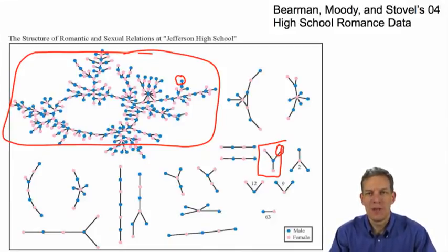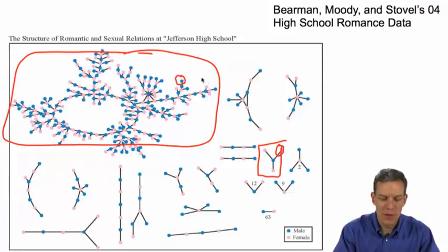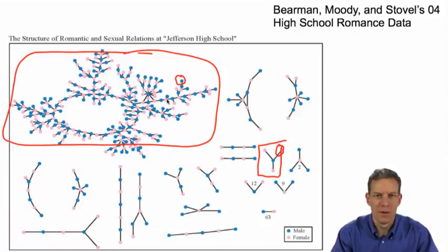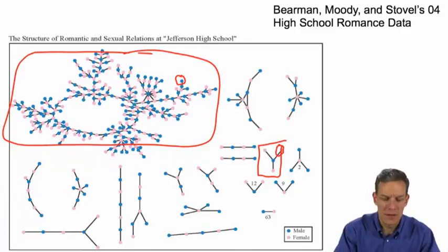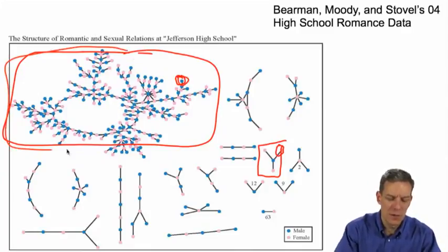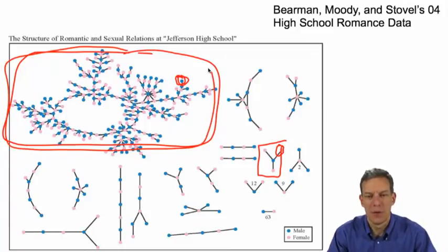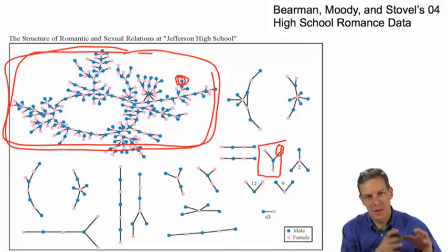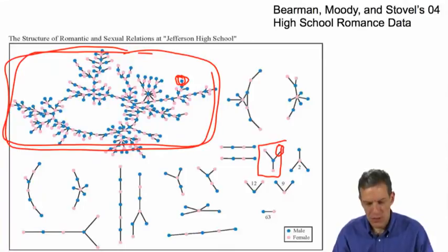Looking at the component structure will help us answer two questions. First of all, what's the probability that we start a contagion? And that's going to be the probability that we end up hitting one of these large components, the giant component. And then how extensive should it be? If we did hit somebody in the giant component, then the reach of it could potentially be the size of the giant component. So understanding what the component structure is will help us understand both the probability of starting and the eventual reach conditional on that.